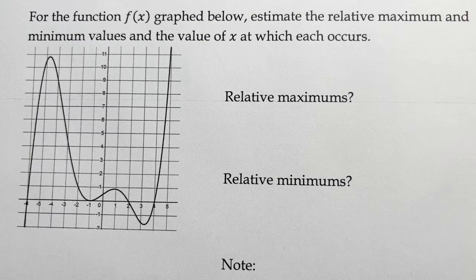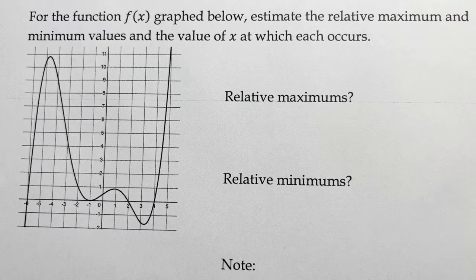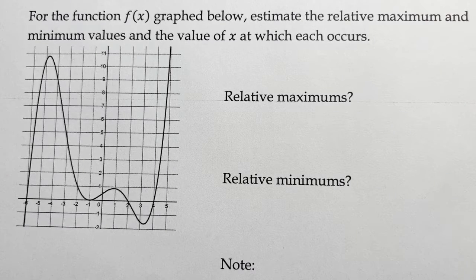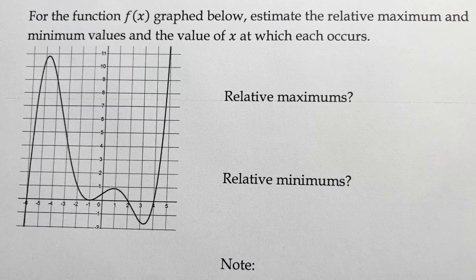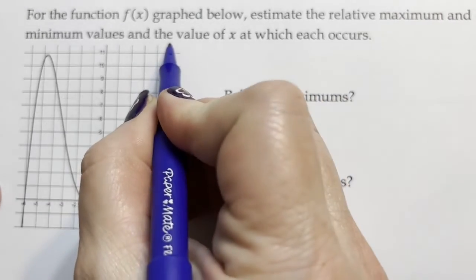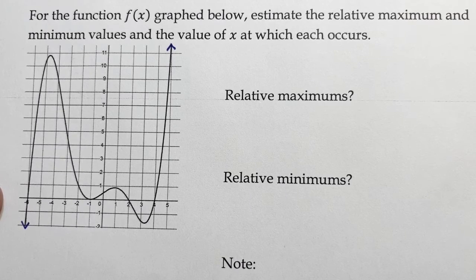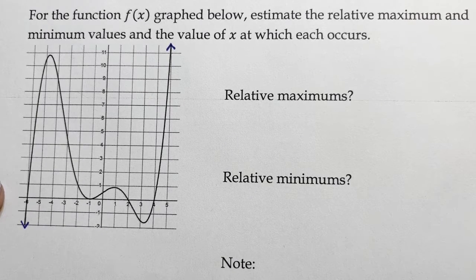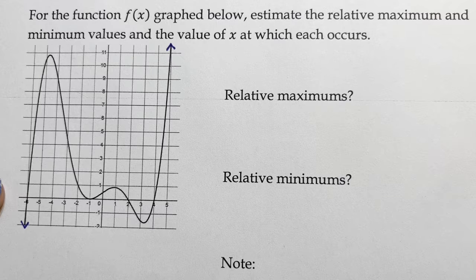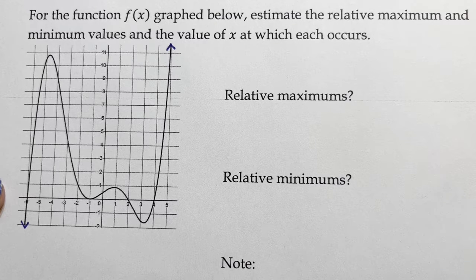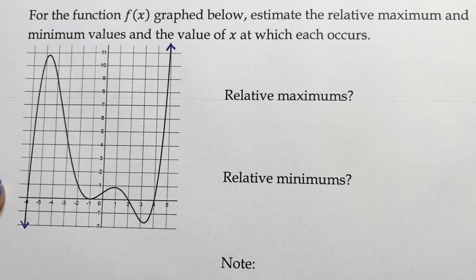Alright, so relative maximum and relative minimum basically says this goes infinitely up forever and this goes infinitely down forever. So there is no absolute max or absolute min for this graph—it goes forever up and forever down.